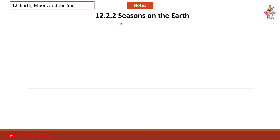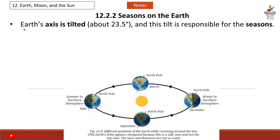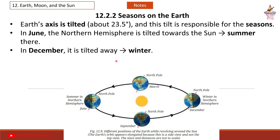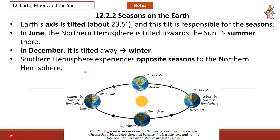12.2.2 Seasons on the Earth. Earth's axis is tilted about 23.5 degrees and this tilt is responsible for the seasons. In June, the Northern Hemisphere is tilted towards the sun — summer there. In December, it is tilted away — winter. The Southern Hemisphere experiences opposite seasons to the Northern Hemisphere.